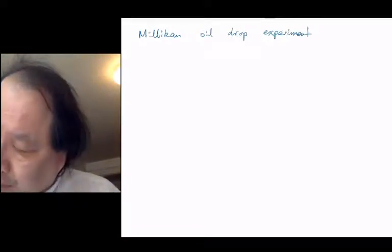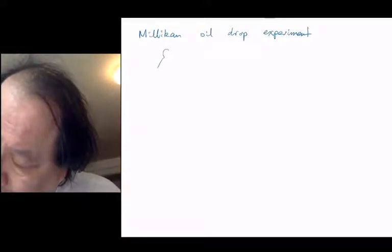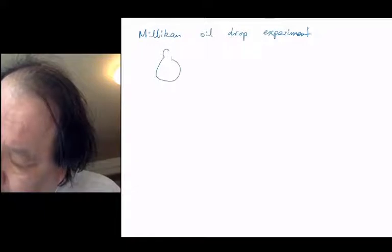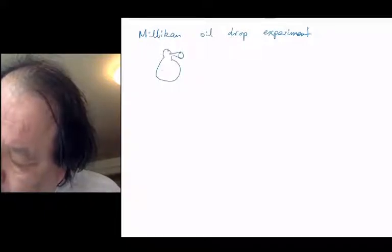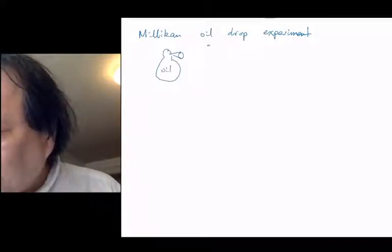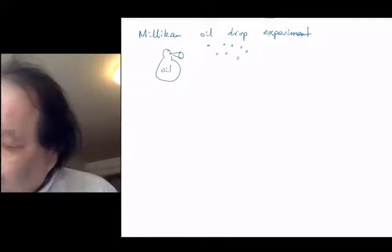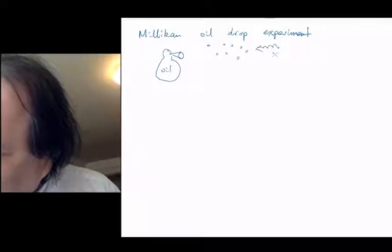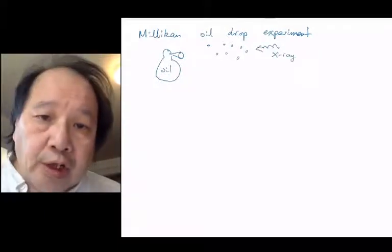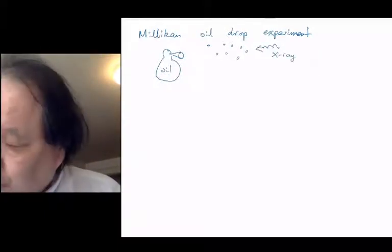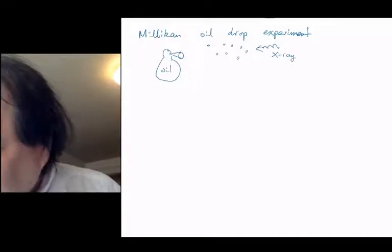The experiment works like this: he had a spray bottle filled with oil, and when you spray it you make little droplets of oil. He shone x-rays on those droplets of oil, and x-rays are very destructive and they charge up the oil droplets, so now he has charged oil droplets.